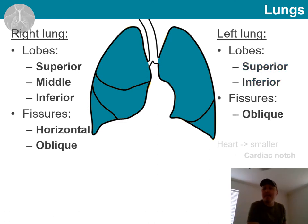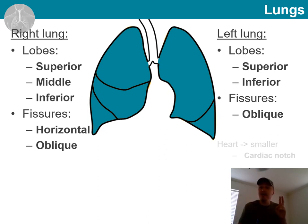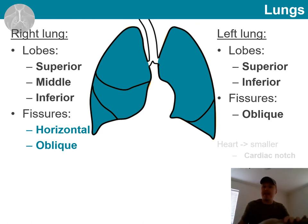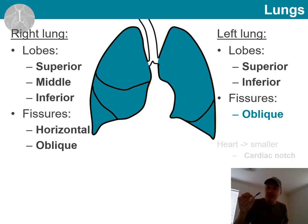Another important term is fissure — a line or depression that runs on the surface of a structure, as we also discussed for the brain and heart. On the right lung, we have two fissures: the horizontal fissure separates the superior and middle lobes, and the oblique fissure separates the middle and inferior lobes. On the left side, since we have only two lobes, we have only one fissure — the oblique fissure — separating the superior and inferior lobes.